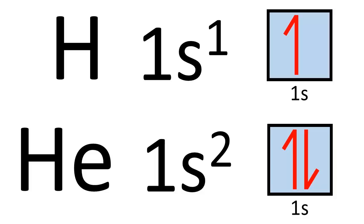The electron configurations of hydrogen and helium were discussed in my last video and they're pretty straightforward since the only orbital with electrons in it is the 1s orbital. So the electron configurations of hydrogen and helium are 1s¹ and 1s² respectively. The orbital diagrams for these two elements are also shown.